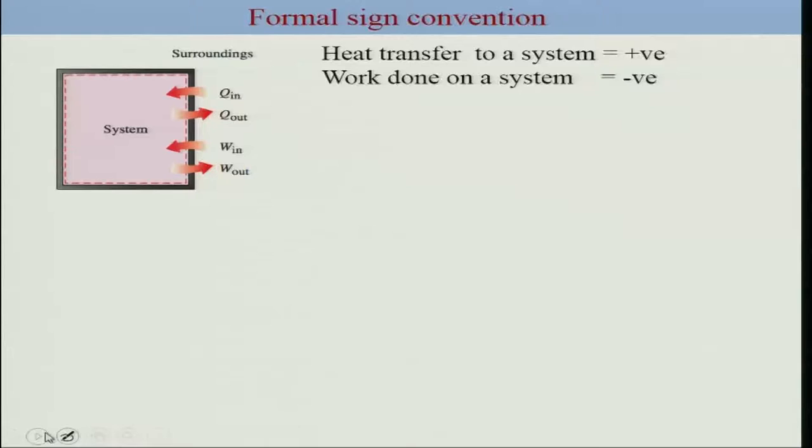Work or heat has a direction, and we need to provide magnitude as well as direction for complete description. This is the formal sign convention. Heat transfer to a system is positive, and work done on a system is negative. We define Q in, Q out, W in, W out where specific directions are already provided. If you are not aware of the direction, you can assume a direction and do the calculation. If the value is positive, your assumptions are right; otherwise, you have to change the direction.